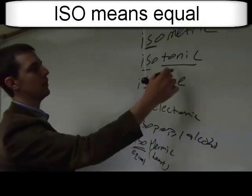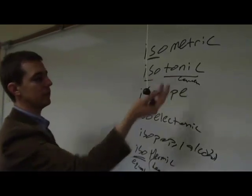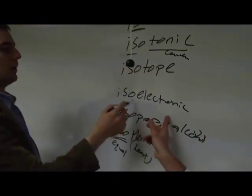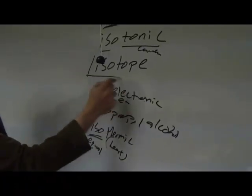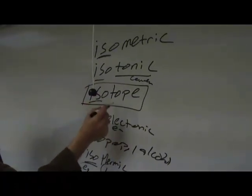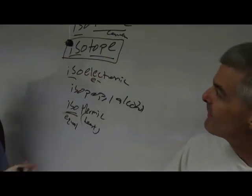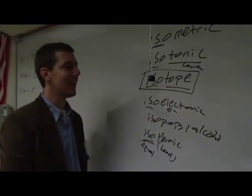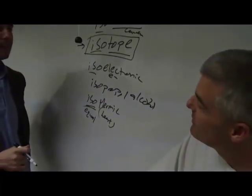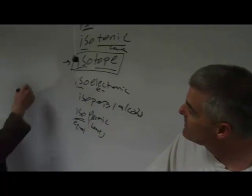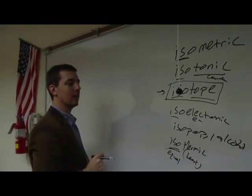So like isotonic — I know that's a biology thing — this has to do with concentration. So we're talking about the same concentration. Isoelectronic: the same number of electrons. So what are we going to talk about today? This one's isotope. So the same number of topes? Exactly. What's a tope? I don't know. I know tope has something to do with atoms. So we're going to learn about the same atoms or something like that.